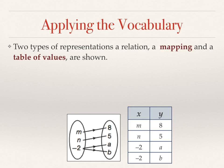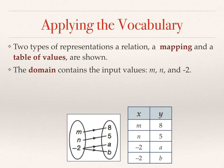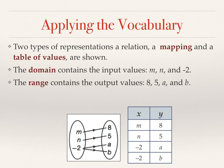The domain of both of them contains the input values m, n, and negative 2. What about the range? Those are the values 8, 5, a, and b.